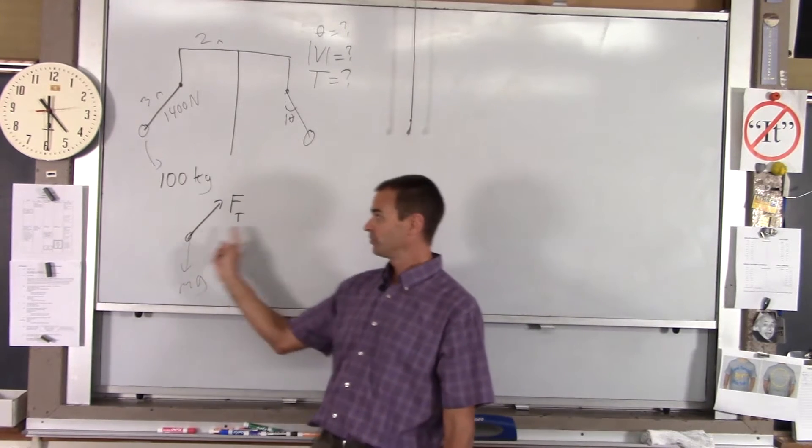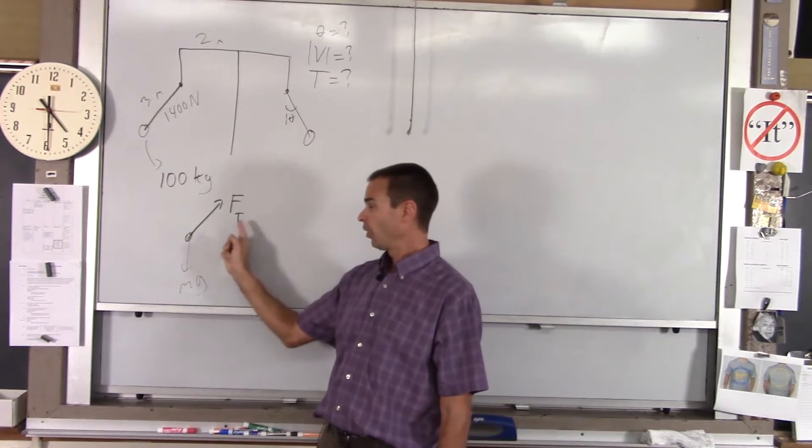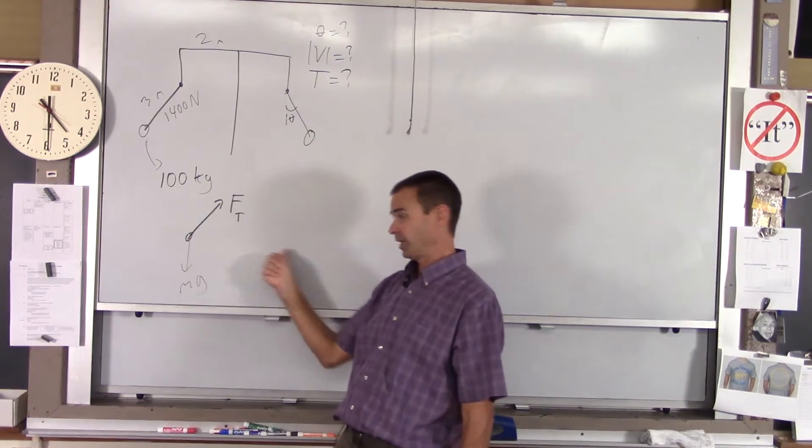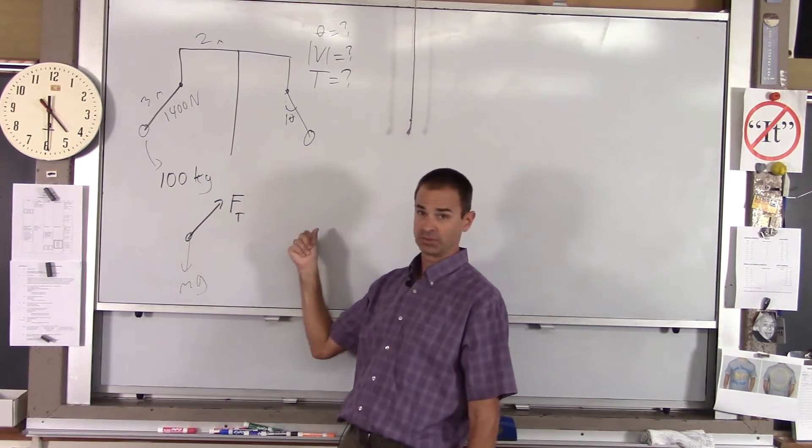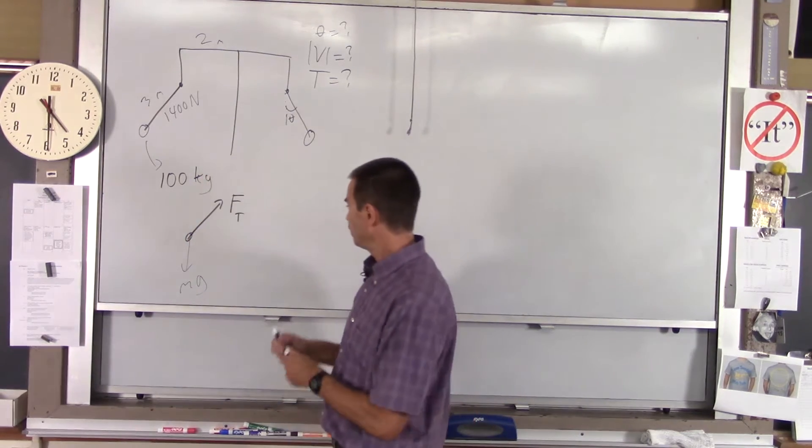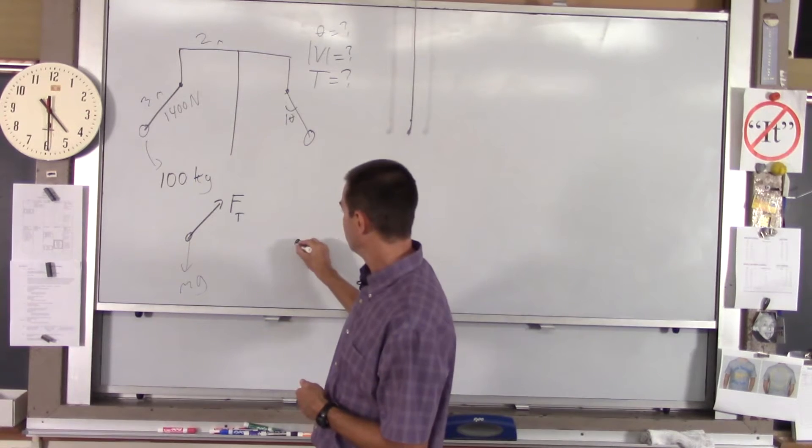The circle this guy is making is a horizontal circle. So we're going to split our forces into the radial direction, which is this way, toward the center of the circle, and then perpendicular to that, which will be up and down. So if we do that, we draw components.